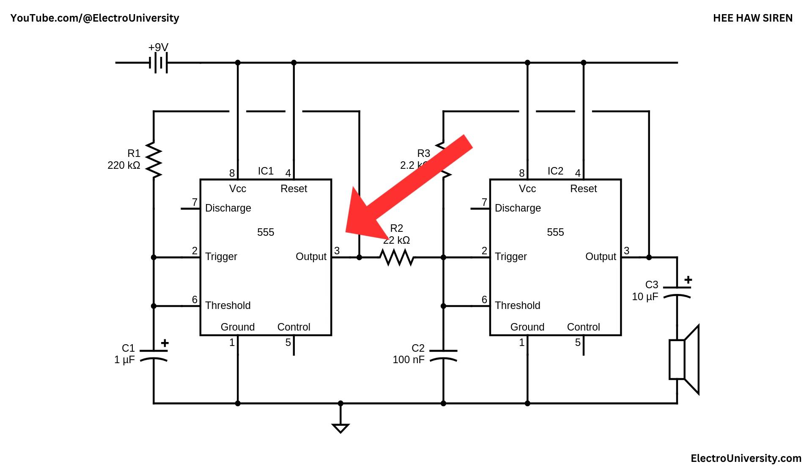The output from IC 1 passes through a 22,000 ohm resistor to modulate the voltage level at pin 2 or trigger and pin 6 or threshold, influencing its oscillation rate.